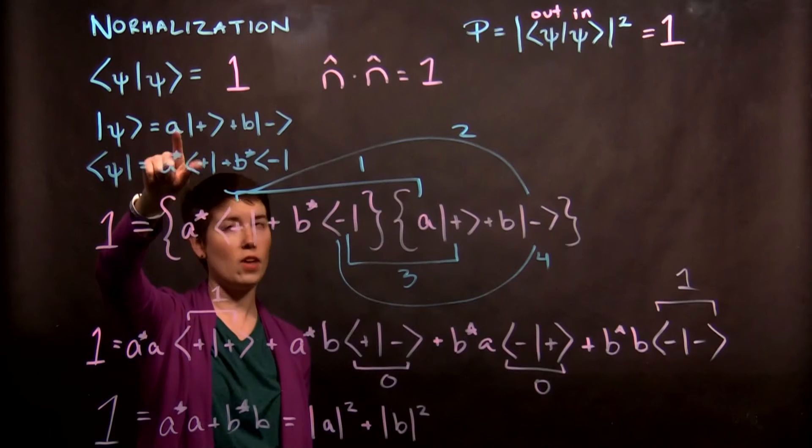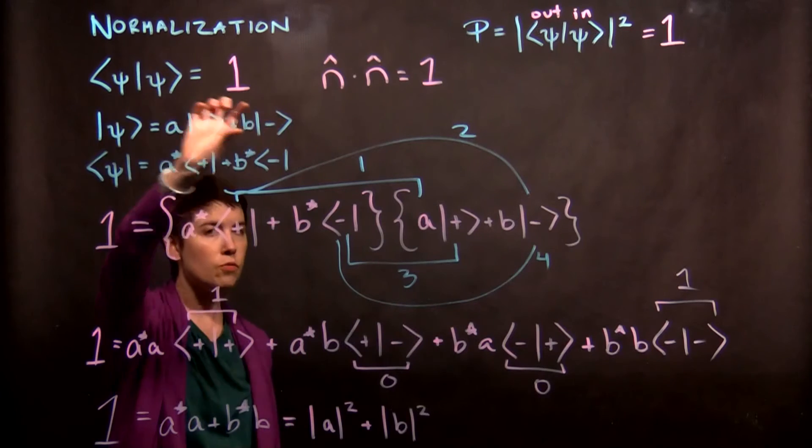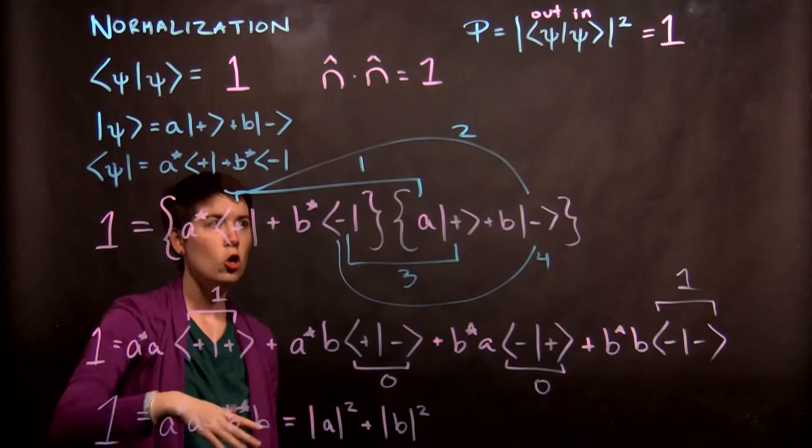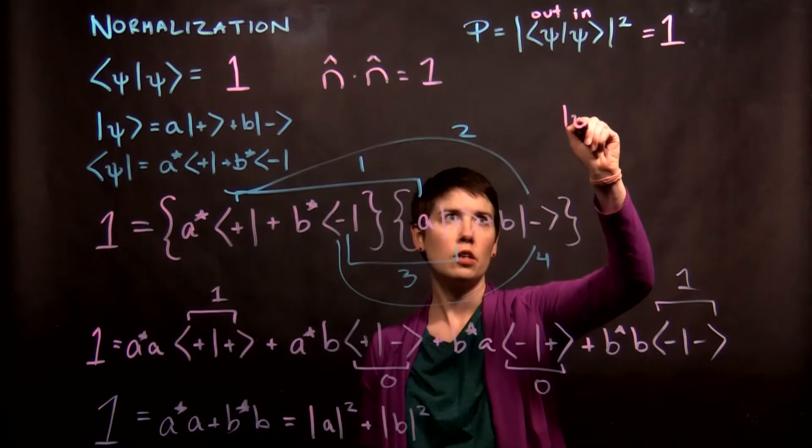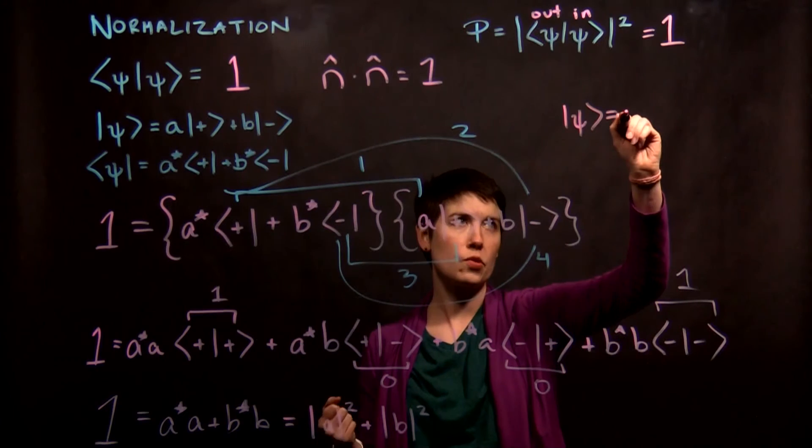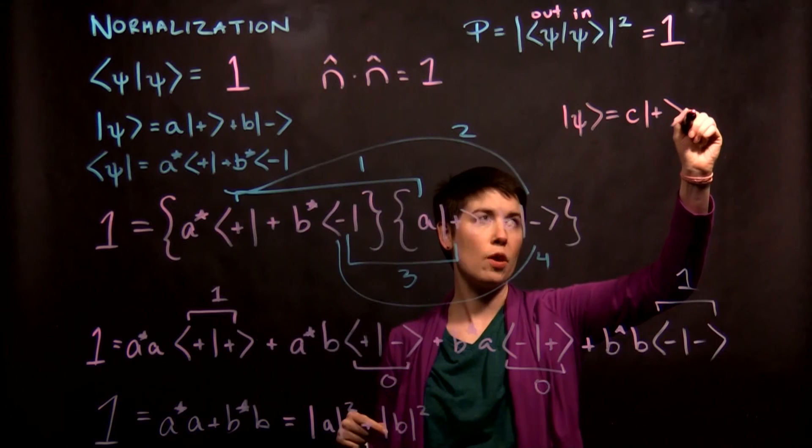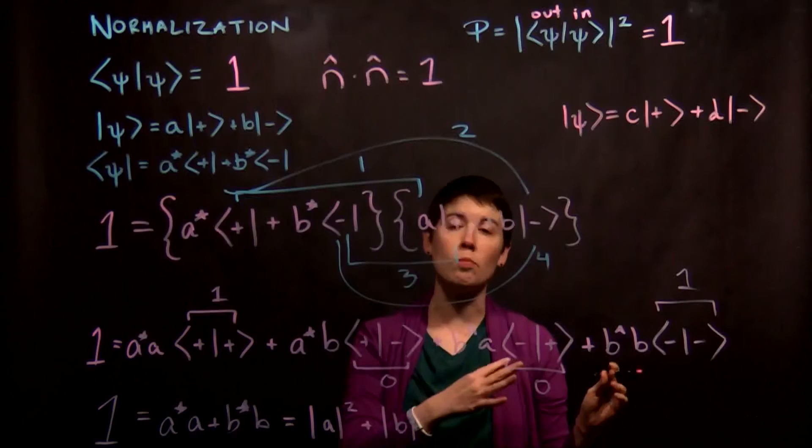So this is actually a constraint on A and B. We can't just have A be 2 and B be 3 and have this be a meaningful quantum state. We, in fact, have to have this normalization. So if you see, in general, some sort of quantum state where, in fact, we have some coefficients here, the first step is going to be normalizing this.